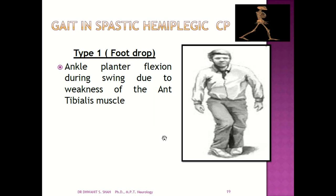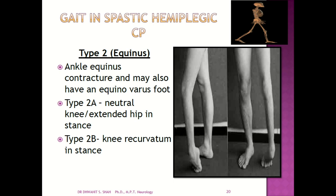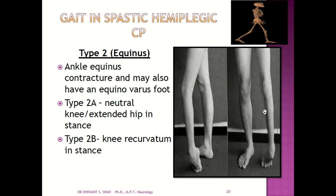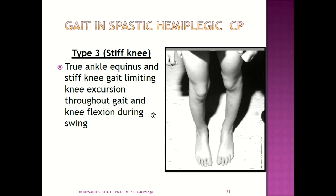In spastic hemiplegia, type 1 is the foot drop gait — ankle plantarflexion is seen during swing due to weakness of the tibialis anterior muscle. Type 2 is the equinus gait — ankle equinus contracture, possibly with equinovarus foot; type 2a has a neutral knee or extended hip in stance, and type 2b has knee recurvatum in stance. Type 3 is the stiff knee gait — equinus combined with stiff knee limits knee flexion throughout gait, including during the swing phase, which may result in a circumduction gait pattern.